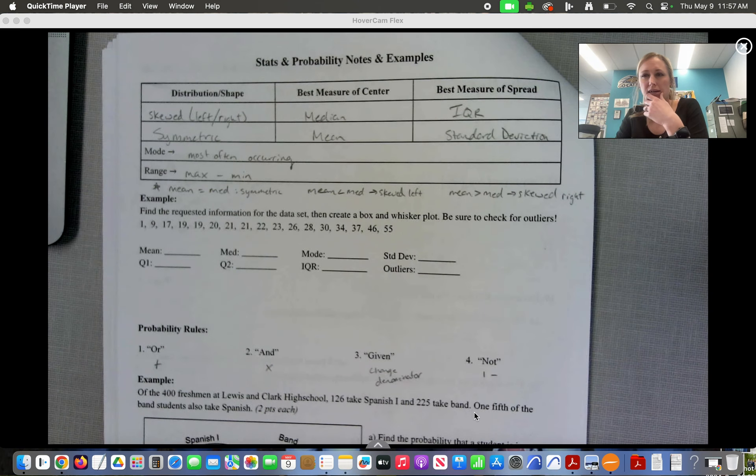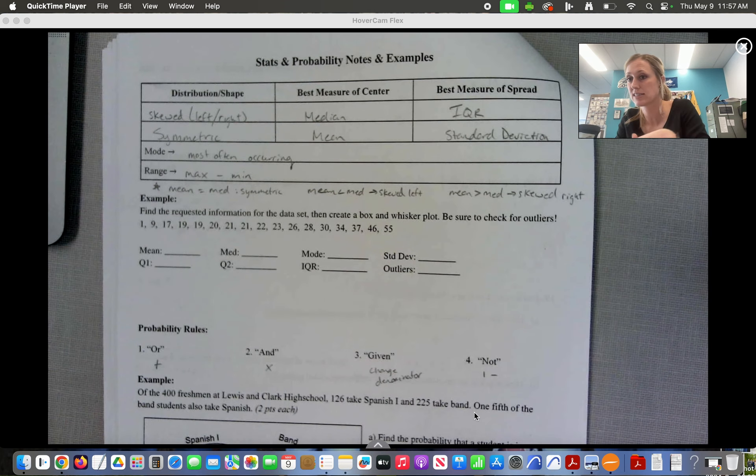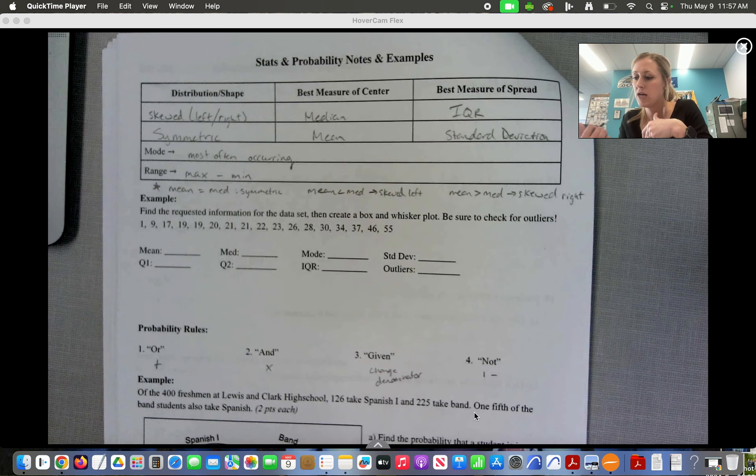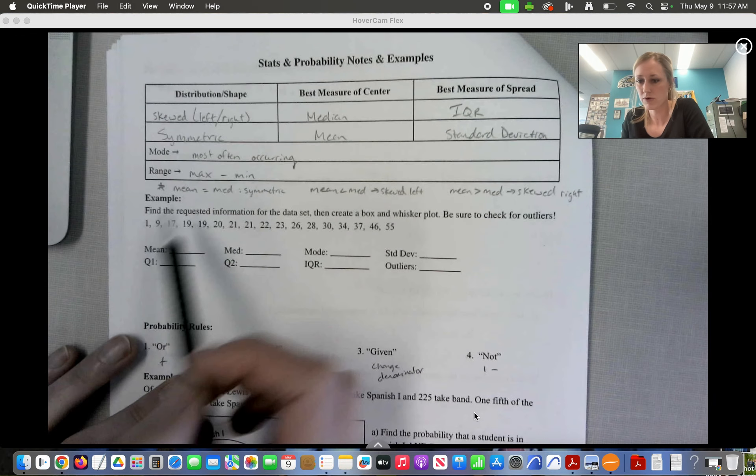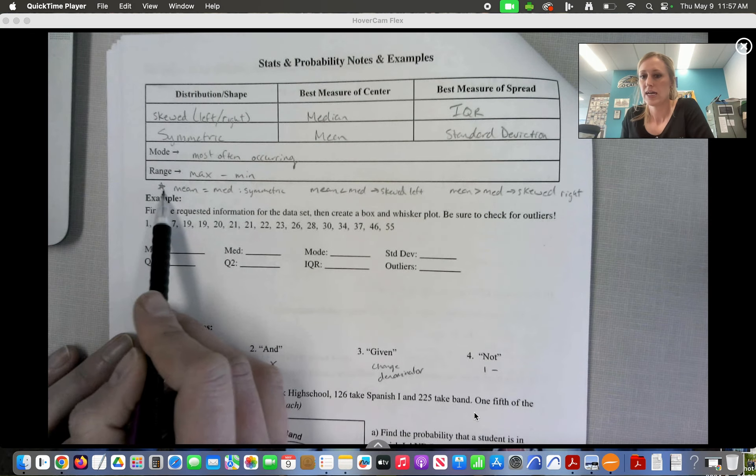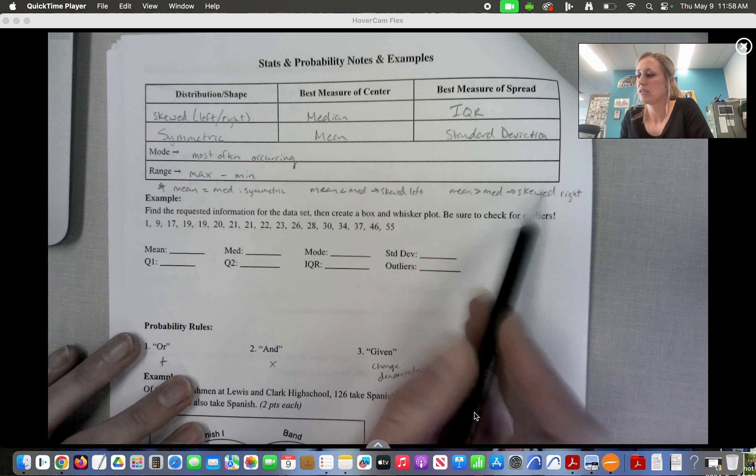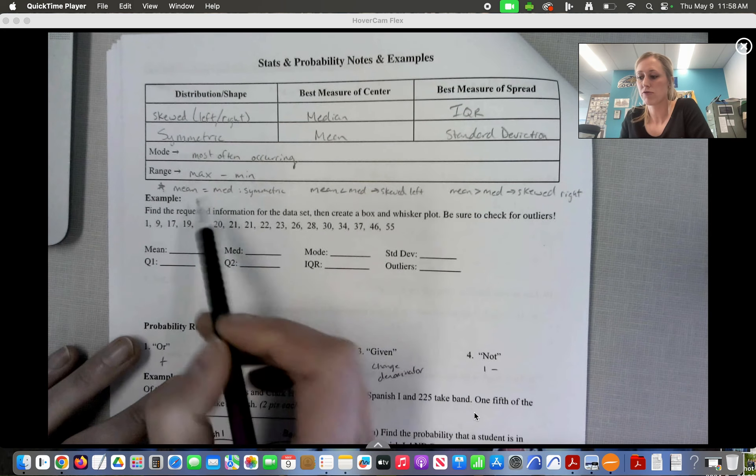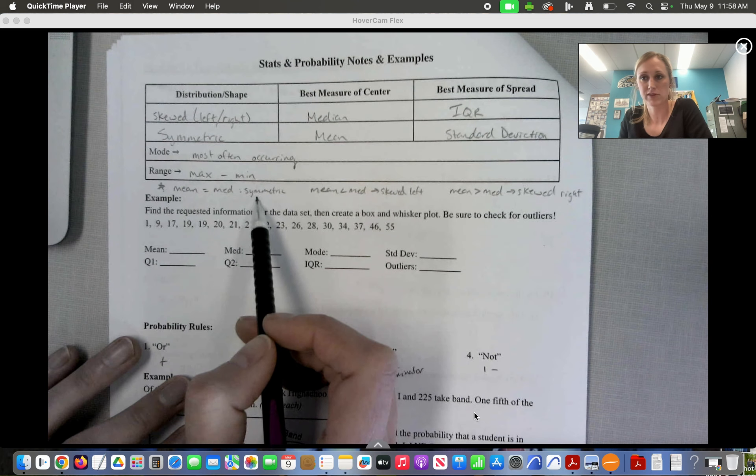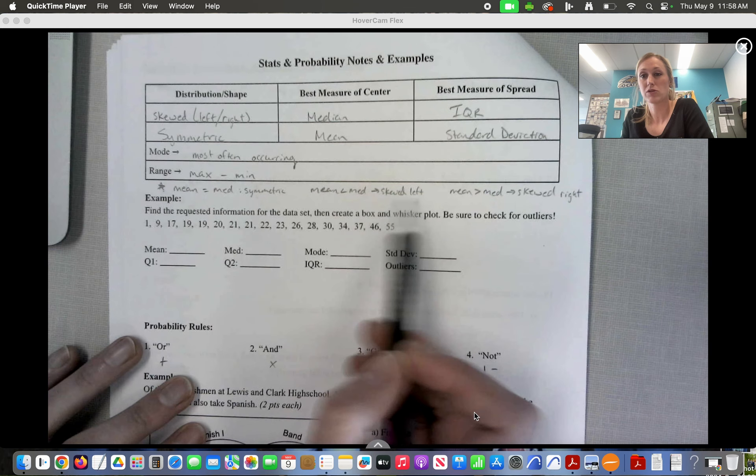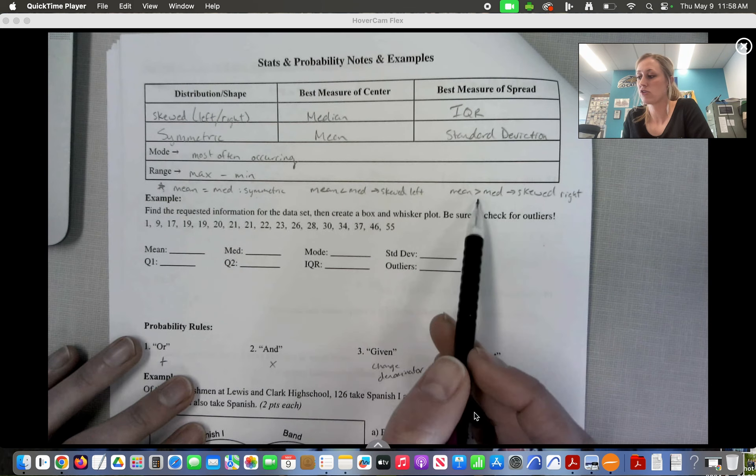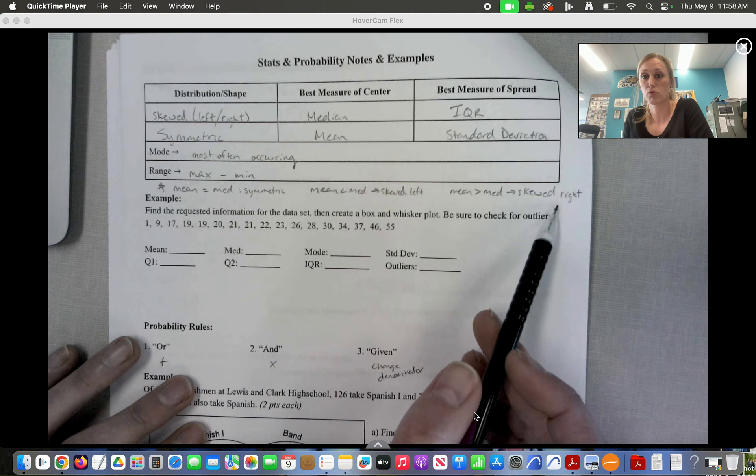Likely you're not going to be asked to calculate standard deviation, but you might be asked to compare two different data sets that give you a standard deviation. What I'd like you to add here though is these three pieces of information: if we know the mean equals the median, we know that the shape of the distribution is symmetric. If the mean is less than median, we know it's skewed left. And if the mean is greater than the median, it's skewed right.